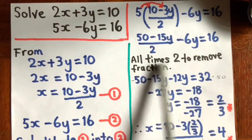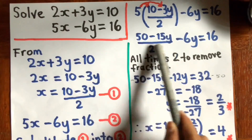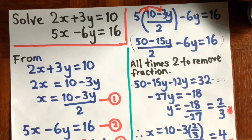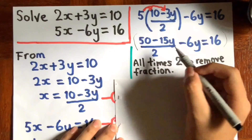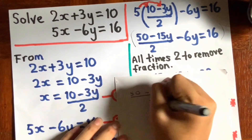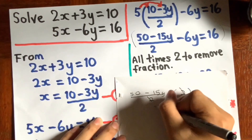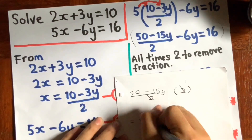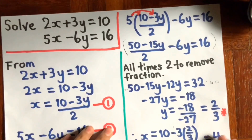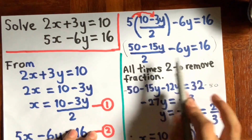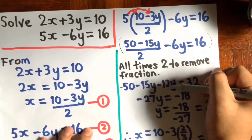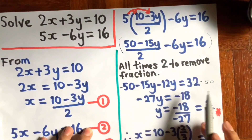So now the next step is to remove this fraction. To remove this fraction, you need to multiply all terms in the equation by 2. So you take (50 minus 15y) over 2, multiply by 2 — you just cancel it — and the result is 50 minus 15y. Then you multiply 6y by 2 to get 12y, and 16 multiplied by 2 gives you 32.